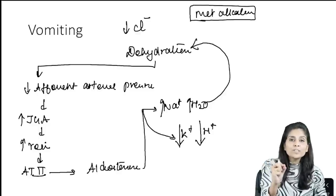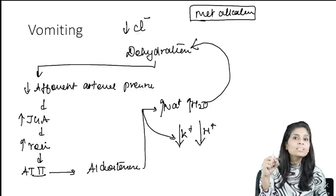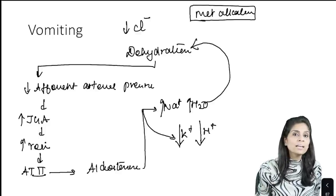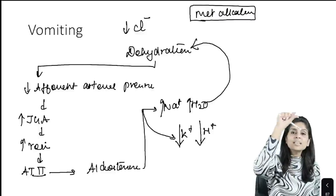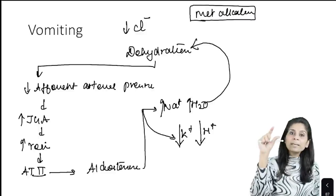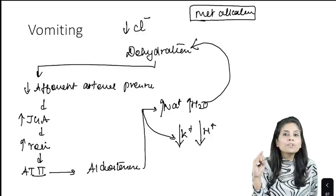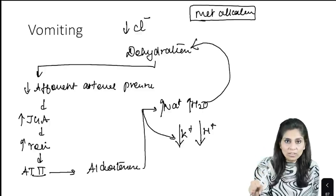Dehydration causes secondary hyperaldosteronism. When you vomit and there is dehydration, afferent arteriolar pressure decreases. The juxtaglomerular apparatus gets activated and releases renin. Renin produces angiotensin 2, and angiotensin 2 stimulates the production of aldosterone.